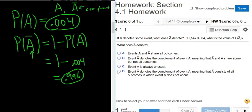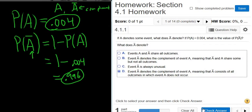Event A denotes the complement of event A, meaning a complement consists of all outcomes in which event A does not occur. Okay, it's pretty wordy.